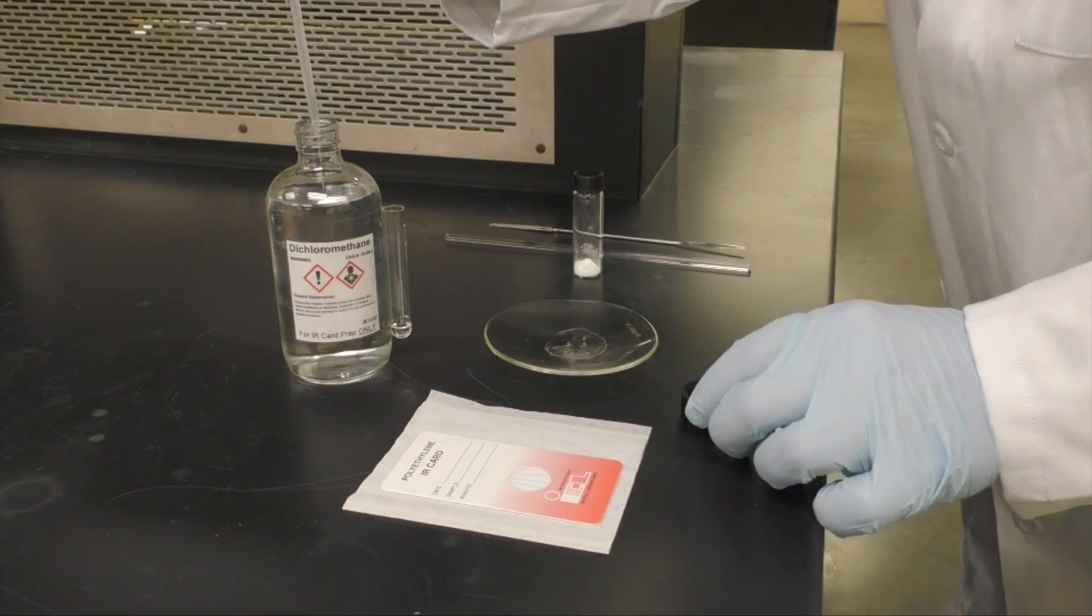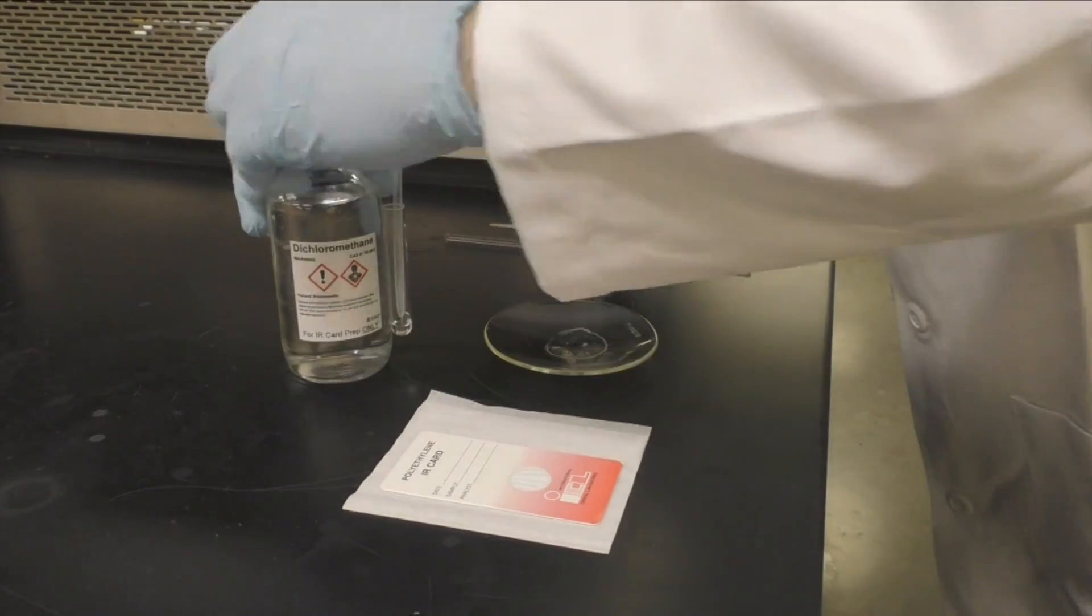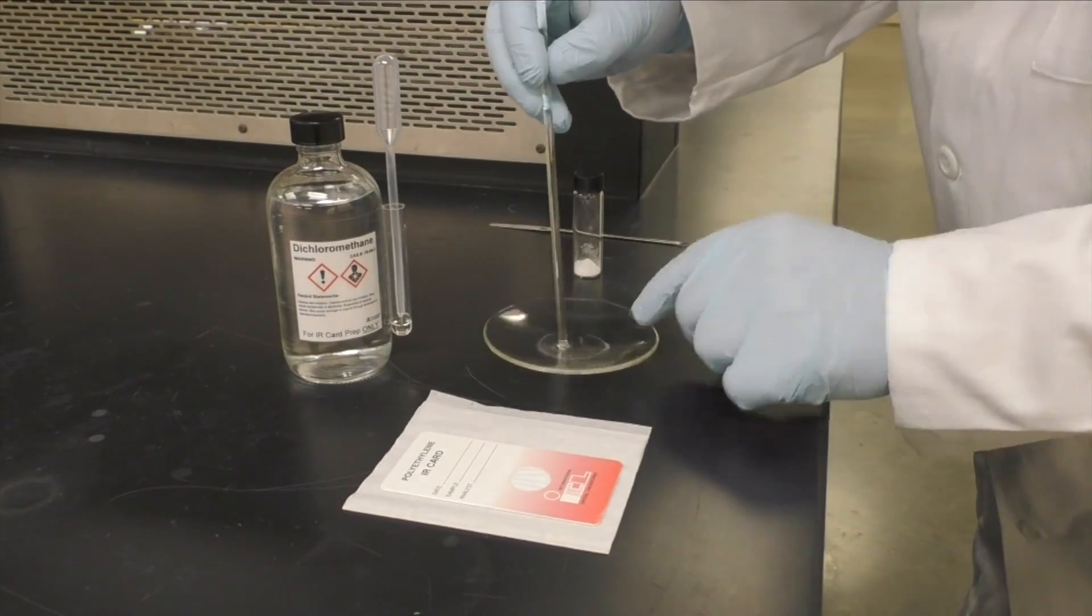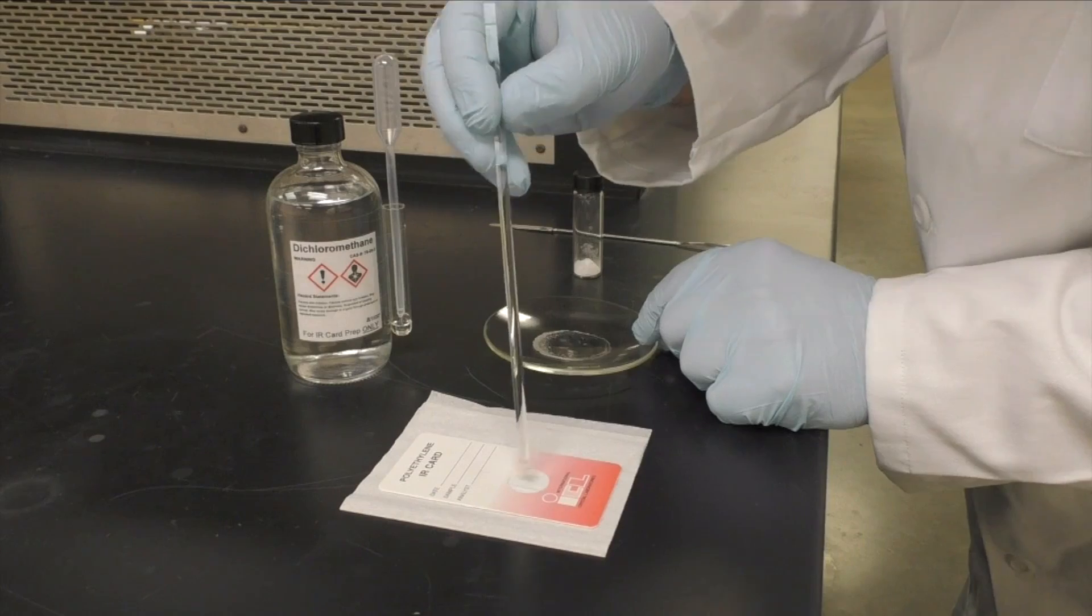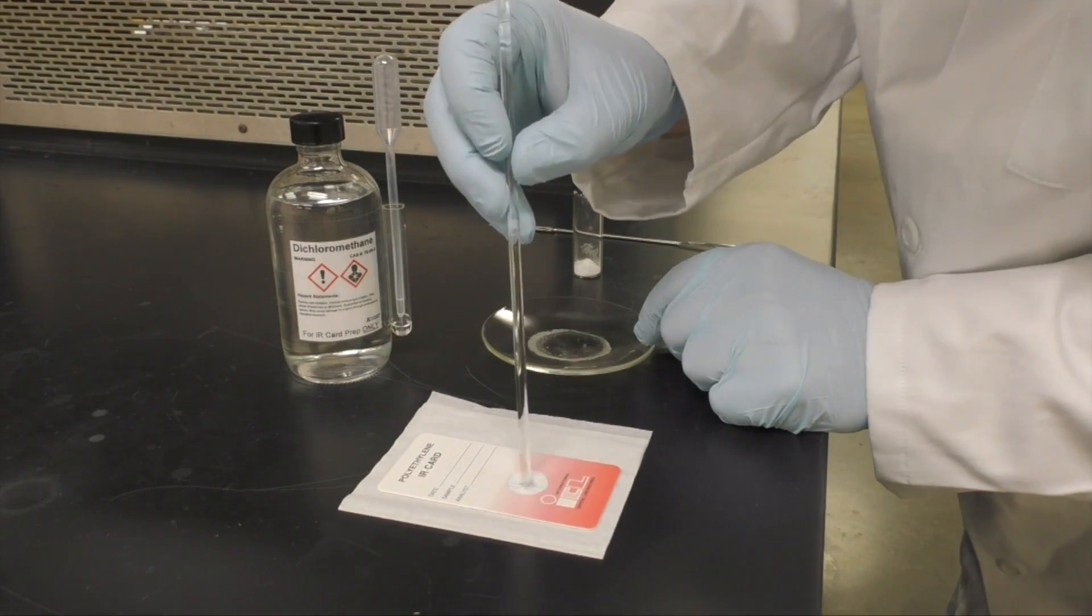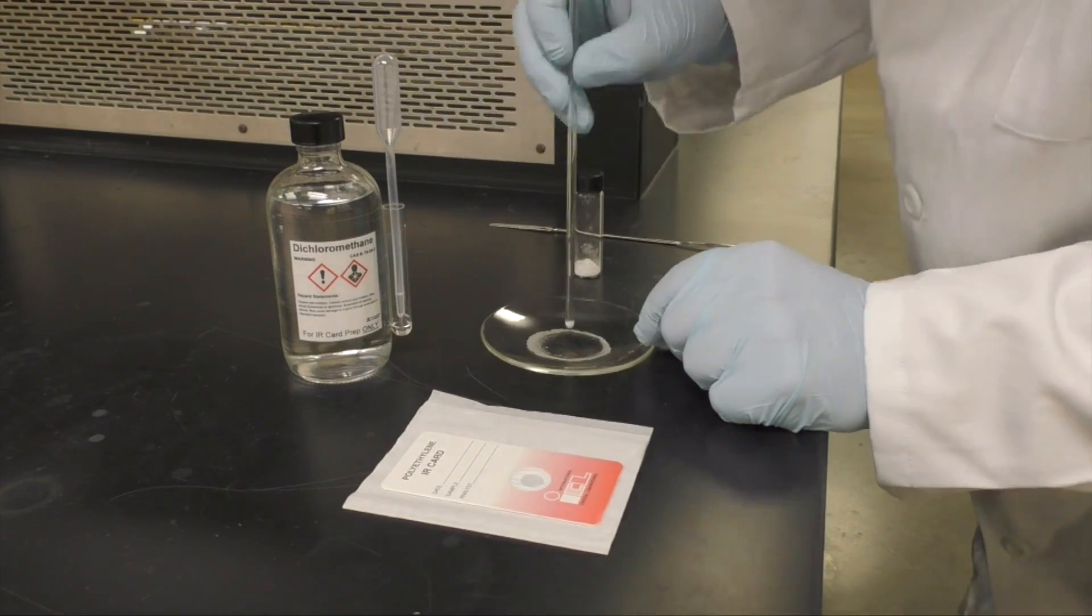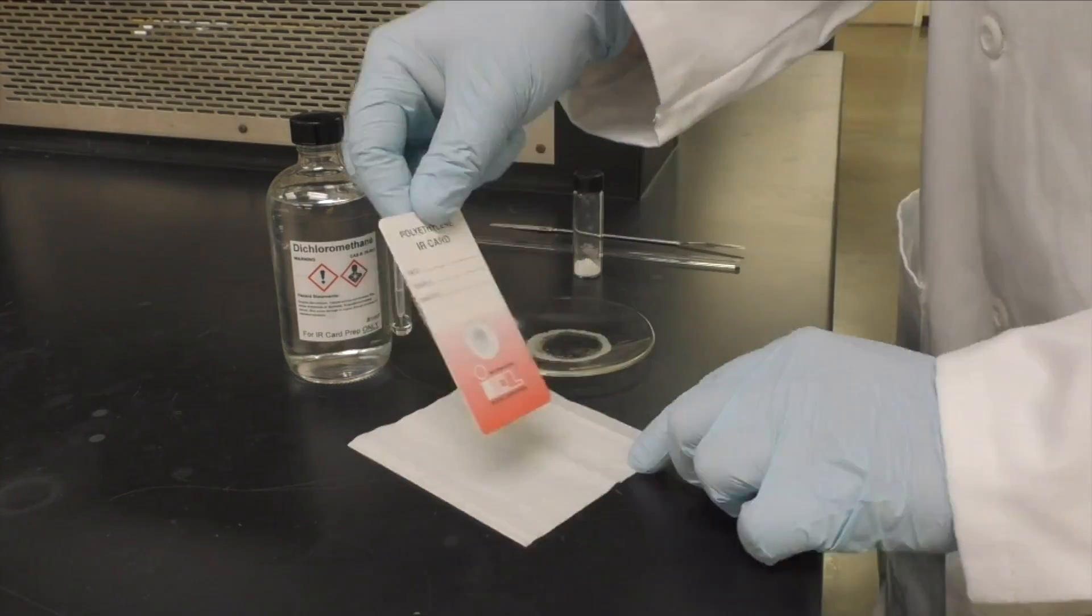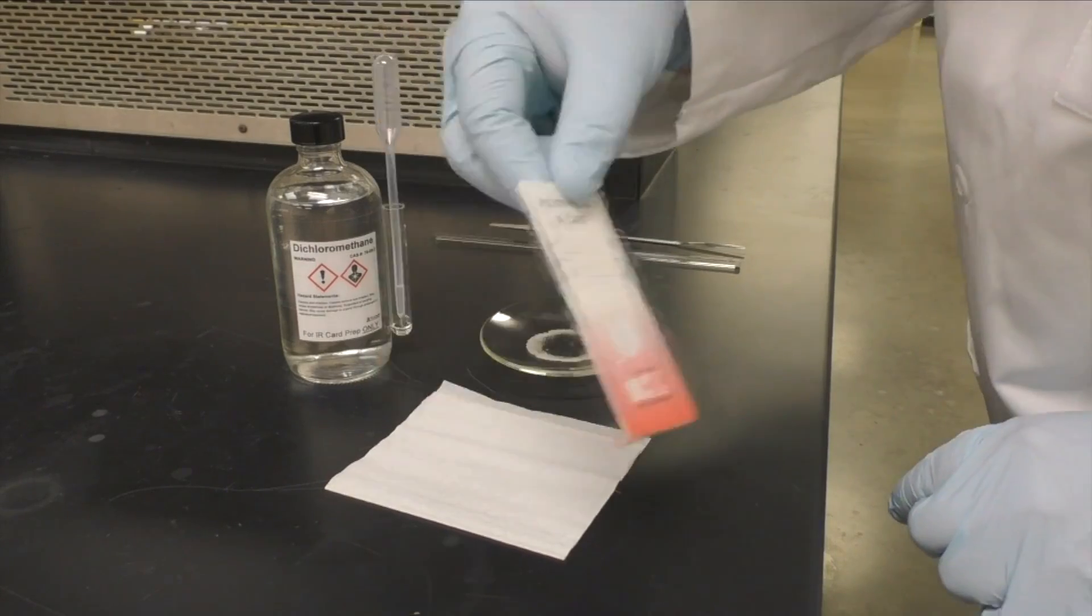Using a glass stir rod, swirl to dissolve your solid. Then lightly touch the stir rod to the PE window and swirl. As the solvent evaporates, you will begin to see a layer of solid form. Repeat the application until there is the correct amount of solid on your card.